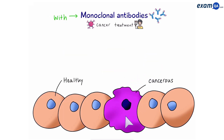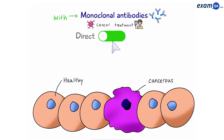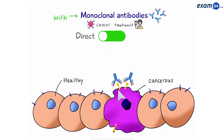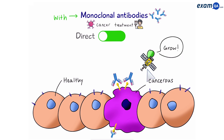Using monoclonal antibodies to treat cancer can be done in two ways: either directly or indirectly. With the direct approach, the antigens on the surface of cancer cells are different to those on healthy cells. Because of this, we can create antibodies that are only complementary to the antigens of the cancer cell. These antibodies will specifically target the cancer cells, meaning that any chemical or hormone that signals the cancer cell to grow will be blocked, inhibiting the cancer cell from growing.